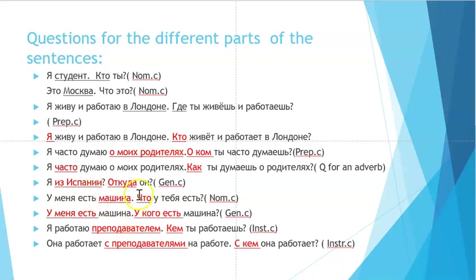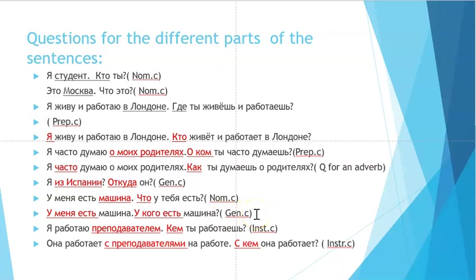For 'у меня есть машина' (I have a car), if we ask about the noun 'машина', the question is 'что' — inanimate — 'что у тебя есть?' (what do you have?). If we ask about the possessor 'у меня', using the genitive construction, the question is 'у кого есть машина?' — 'who has a car?' This is pure genitive case.